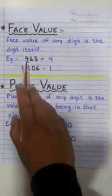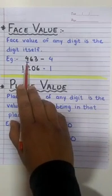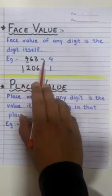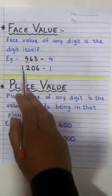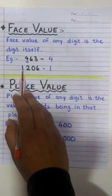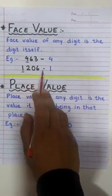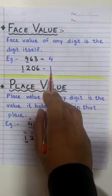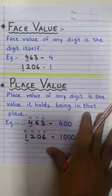For example, if I ask you the face value of 4 in 463, it will remain 4 only. Similarly, if I ask you the face value of 1 in 1206, it remains 1, the digit itself. Easy, isn't it?